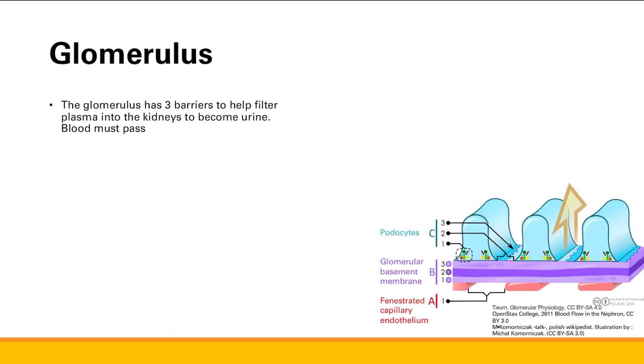We're going to take a closer look at the glomerulus and see how it works to filter the plasma. It has three barriers to filter plasma into the kidney to become urine.